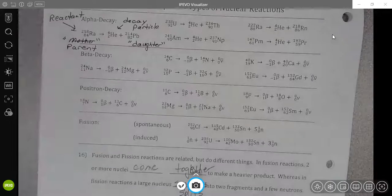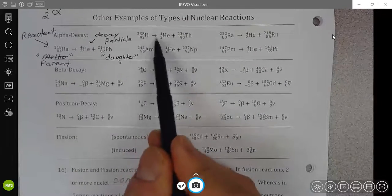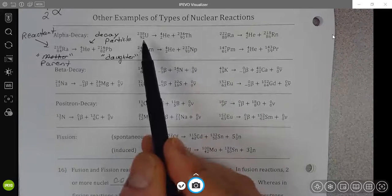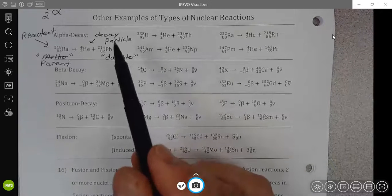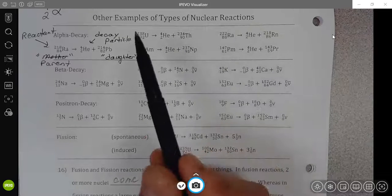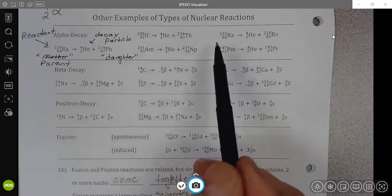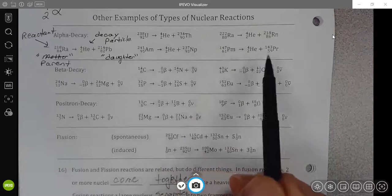So the big thing with alpha decay is that your mass number always goes down by four between parent and daughter, and that your atomic number always goes down by two. The other thing is we typically only see alpha decays for very heavy atoms. Promethium is one of the lightest elements that is known to undergo alpha decay.